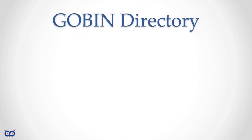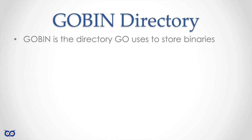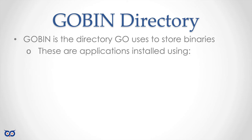Besides your Go source directory, there's the Go bin directory — this is where Go stores binaries. When you compile Go source into executables, those executables go into the Go bin directory. Similar to how Unix uses a bin directory to store executables, by having a Go bin directory you can add it to your PATH so that installed applications are available on the command line. Applications get installed when you run go get or go install.